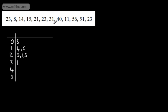40, I'm going to have 4 and 0. 11, we will have 1 and 1. 56, we're going to have 5 and 6. 51, we're going to have 5 and 1. And finally, 23, we're going to have 2 and 3.